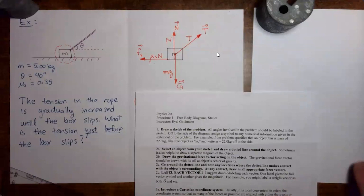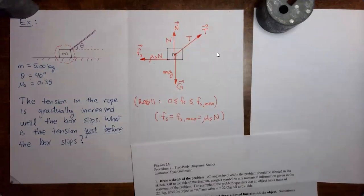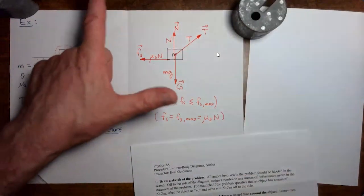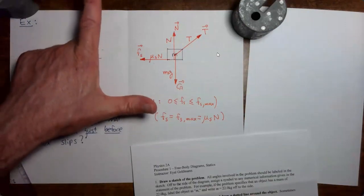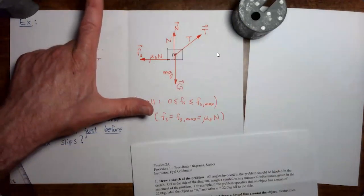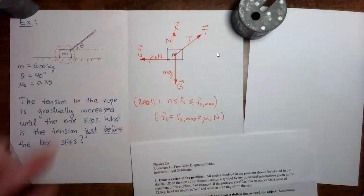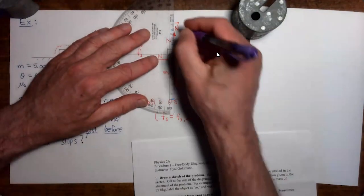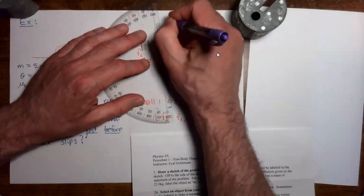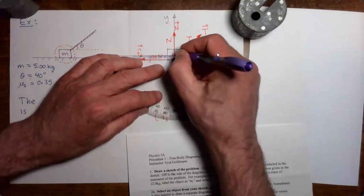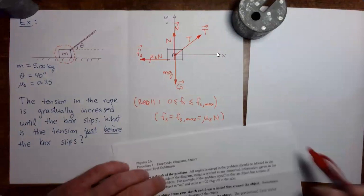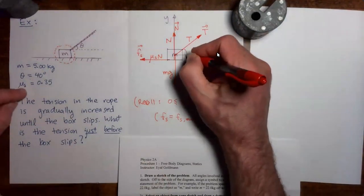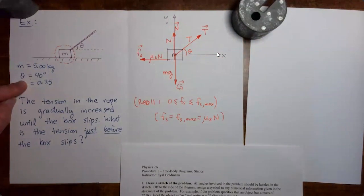Step three: introduce a Cartesian coordinate system. We want to align the axes so that as many vectors as possible line up along one axis or the other. Standard orientation works well here — three of the four force vectors will line up with one axis or the other. We place the y-axis and x-axis, and the tension vector makes an angle theta with the plus x-direction, where theta equals 40 degrees.